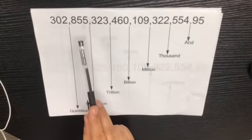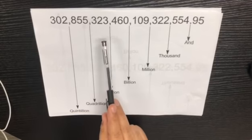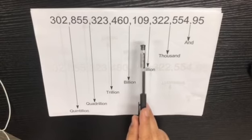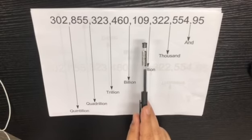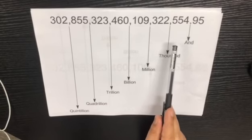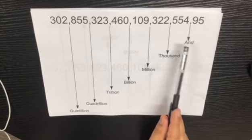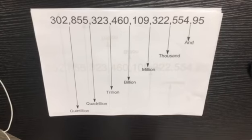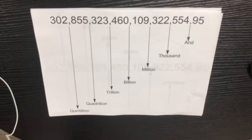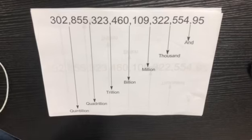So the full number is: 302 quintillion, 855 quadrillion, 323 trillion, 460 billion, 109 million, 322,554.95. That is the simplest way to say a big number.